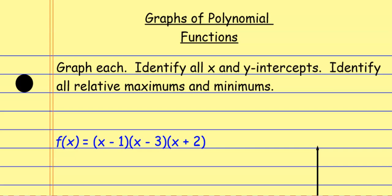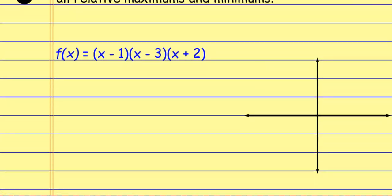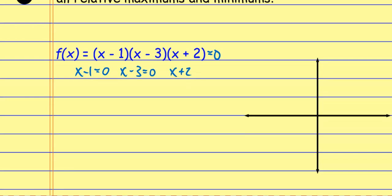For example, looking at this first function from what we already know: when it's in factored form like this, we can easily find the x-intercepts. So if this thing equals zero, I've set each of those factors equal to zero. I would add the one here, add the three there, and subtract the two on the last one.